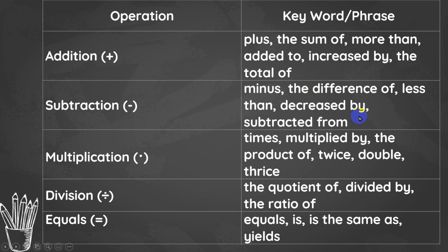Take note that in subtraction, the minuend and the subtrahend cannot be interchanged — their position cannot be interchanged. For multiplication, we have: times, multiplied by, the product of, twice, double, thrice, four times, five times. For division, we have: the quotient of, divided by, the ratio of. And for equals, we have the words: equals, is, is the same as, yields.